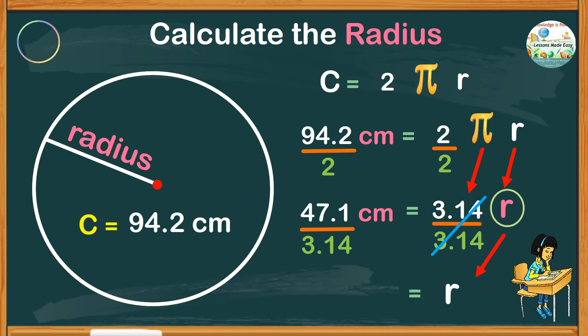So we have 47.1 divided by 3.14. We get a quotient of 15. Our radius is 15 centimeters.